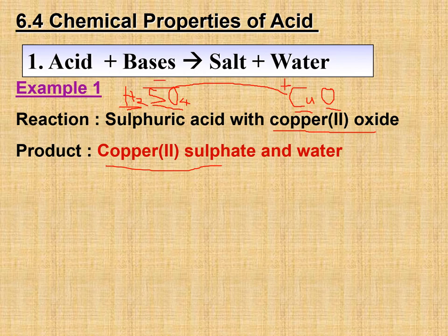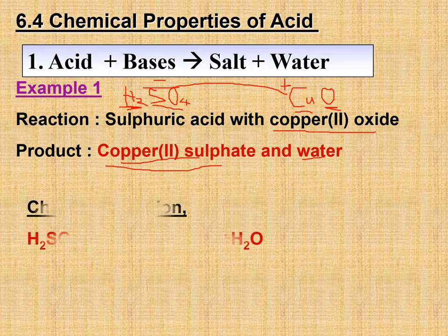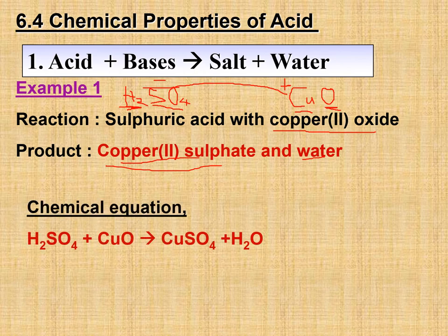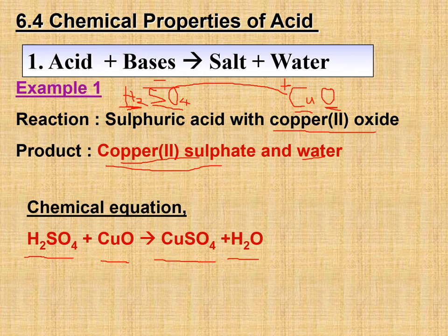The positive copper ion will combine with the negatively charged sulfate ion to produce copper sulfate. And the H⁺ ion combines with the oxide ion to produce water — it's like swapping partners. So the equation is: H₂SO₄ + CuO → CuSO₄ + H₂O.